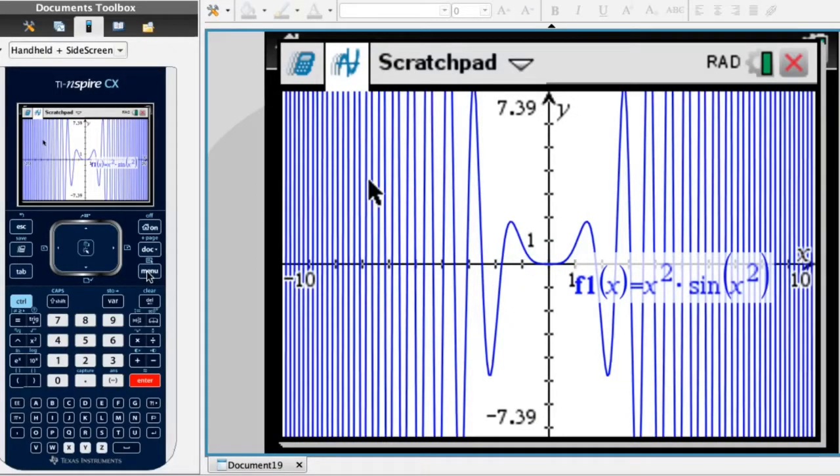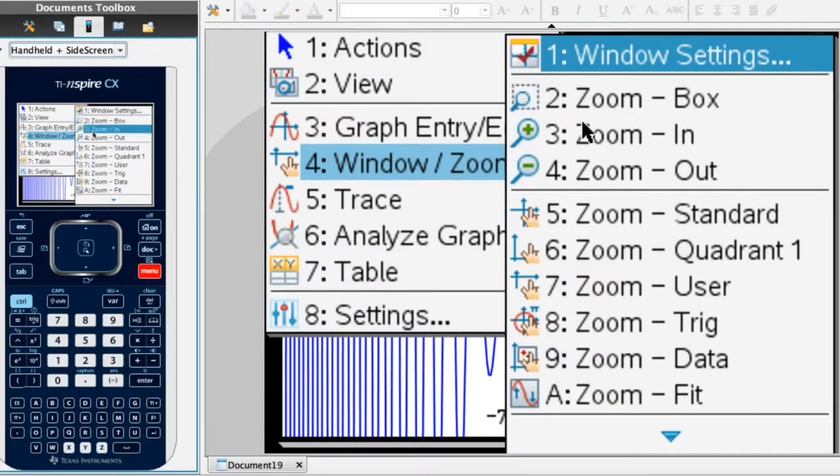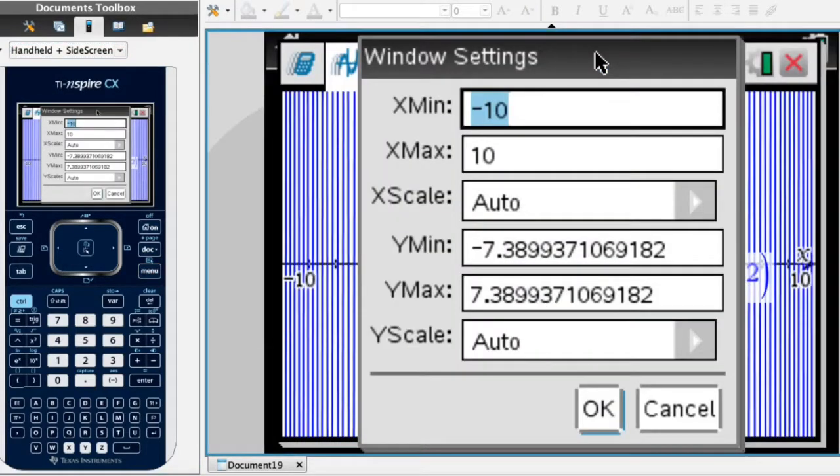To do that I go ahead and click on menu. I then select the fourth option window slash zoom, and the first option I see is window settings which I click on. Now it's asking me for the x min, in other words the smallest x value. And as I said I'll make that negative 1. For the maximum x value I'll go ahead and select x equals 4.